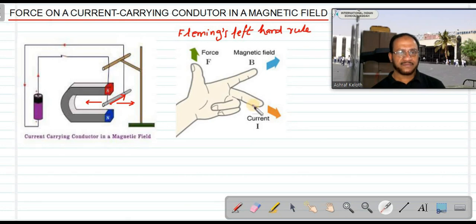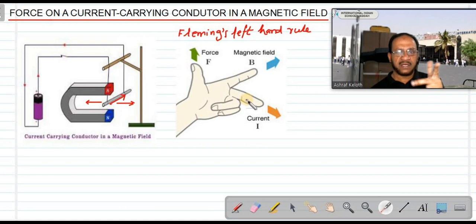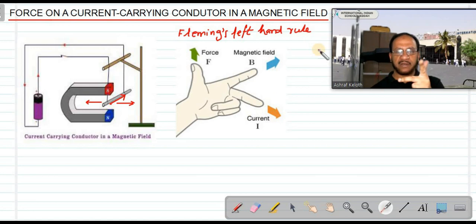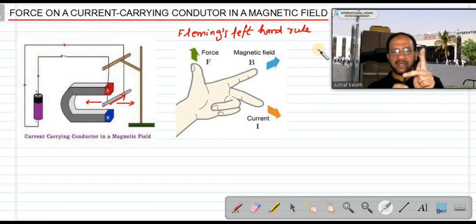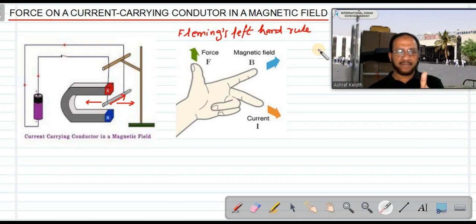According to Fleming's Left Hand Rule, stretch the three fingers — thumb, index finger, and middle finger — of your left hand mutually perpendicular to each other. If the index finger represents the direction of magnetic field and the middle finger represents the direction of current, then the thumb will point in the direction of the force acting on the conductor.